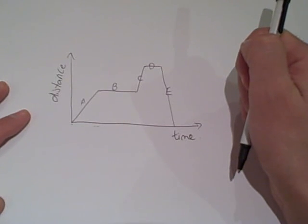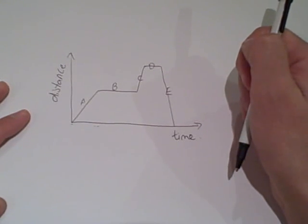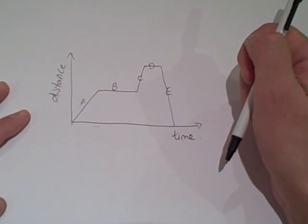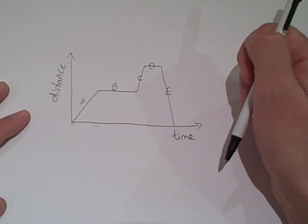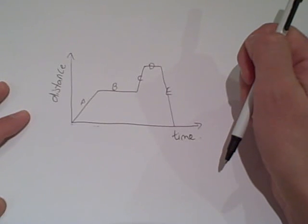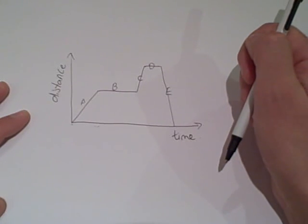Let's see if you were listening. In which section is it stationary? Hopefully you chose B and D. In which section is it moving fast in a forward direction? Hopefully you chose C. And finally, in which section is it moving in the opposite direction? Hopefully you chose E.